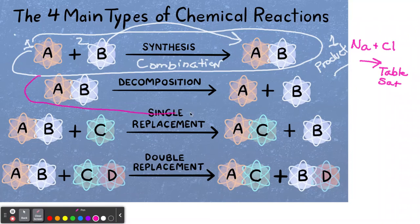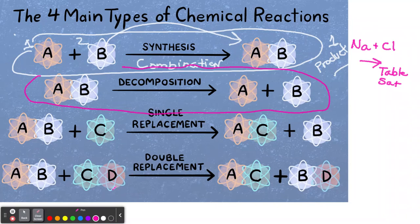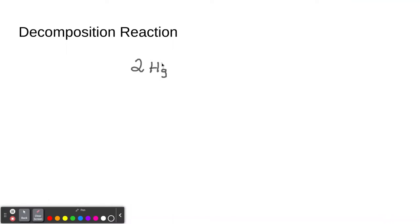Now let's talk about decomposition. If you look at it, it's the complete reverse of synthesis — you have one compound and it's going to yield two products. For example, we have HgO — mercury oxide — which is a solid compound. Even though mercury is liquid and oxygen is a gas, when combined they create mercury oxide as a solid. This compound needs the delta sign (Δ) because heat has to be added.